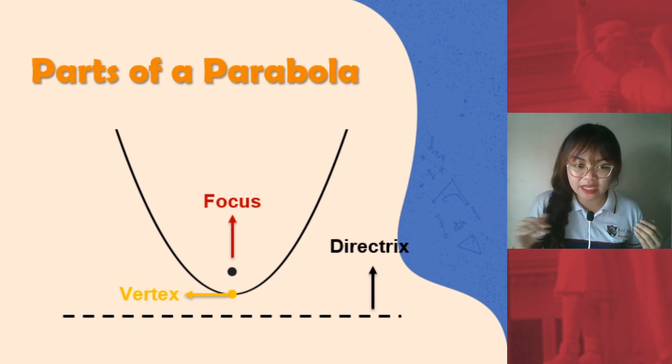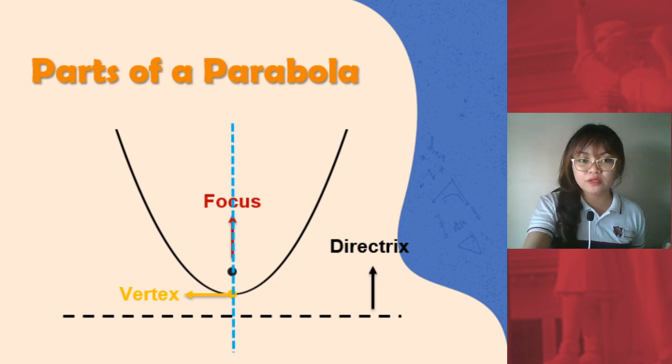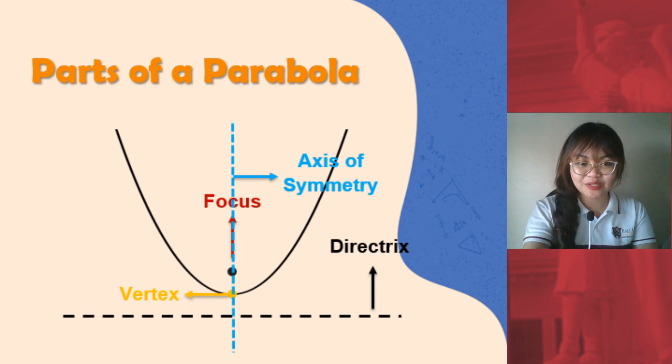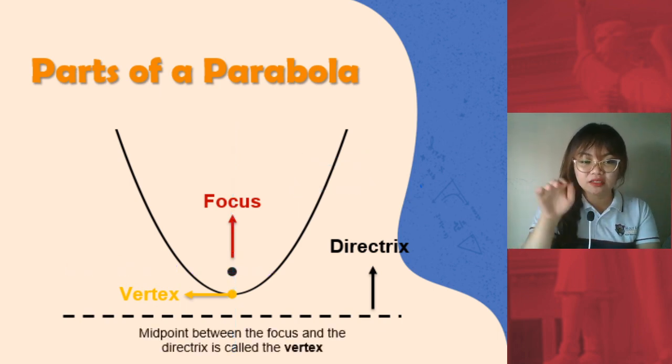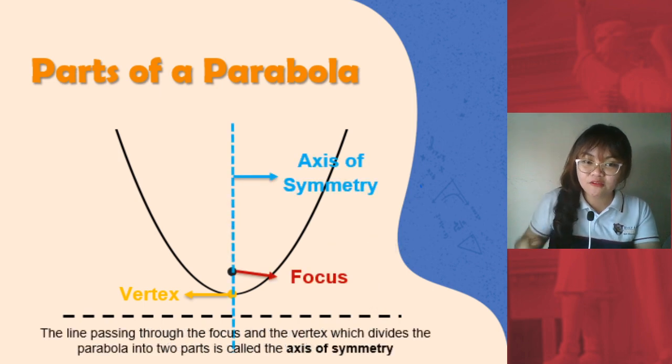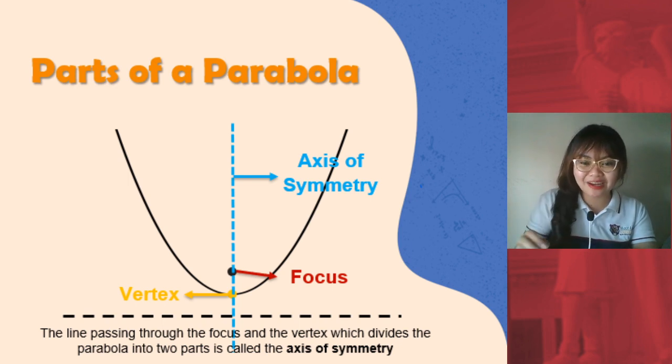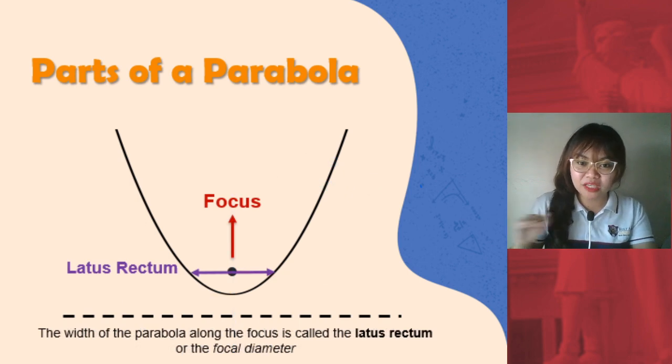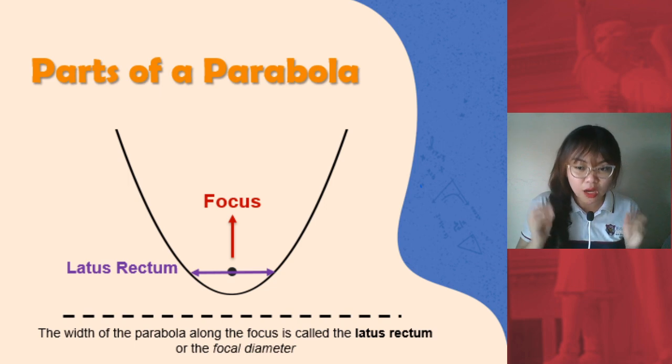That means this divides the measurement between the focus and the directrix. Because when the parabola is divided into two equal portions, this is now what we call the axis of symmetry. And then for this measurement along the focus, this is called latus rectum. Again, let's talk about those points. The lowest point or the midpoint between the focus and the directrix is called the vertex. If we draw a line that divides the parabola into two portions, it's called the axis of symmetry. This axis of symmetry goes through both your focus and your vertex. And then if you would measure along the focus, measure how wide your parabola is along the focus, this is now called latus rectum or focal diameter.